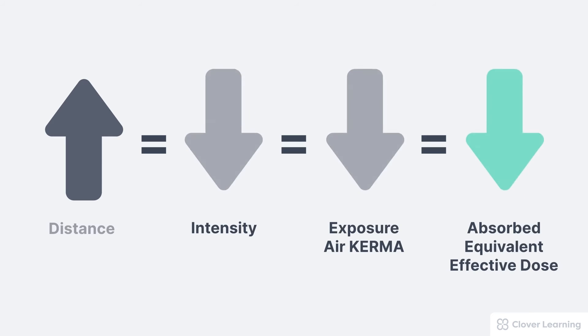We could also change the distance, and the result is different. If we increase the distance between the person and the x-ray source, this is going to result in a decrease in the intensity of the x-ray beam, which, according to the inverse square law, will then result in a measurable decrease in the exposure and air kerma. And if those things are decreasing, the absorbed dose, the equivalent dose, and the effective dose also all decrease.